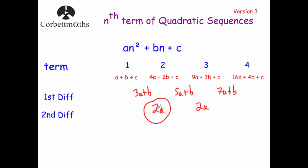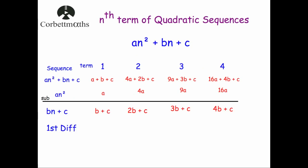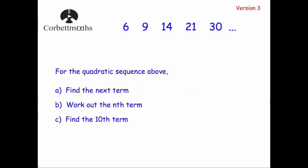This is the key point in this approach — the only bit you really need to remember: the second differences always equal 2a, so you halve it to get a. Then you compare the sequence an² to the sequence given in the question and see what the remaining bn + c part would be. So let's look at a typical question. We've got the sequence 6, 9, 14, 21, 30.